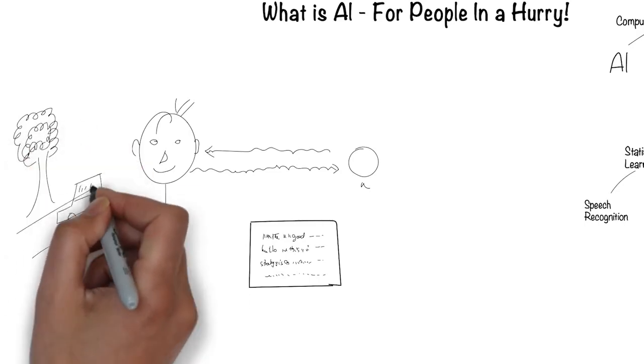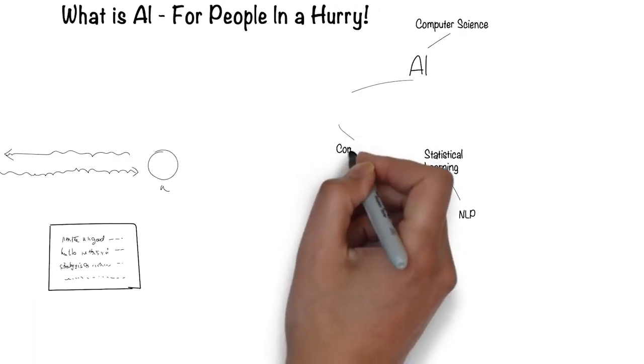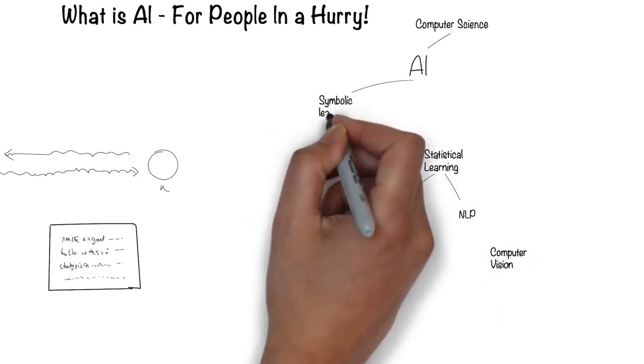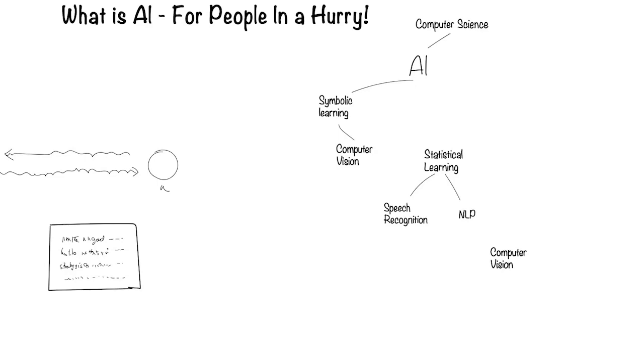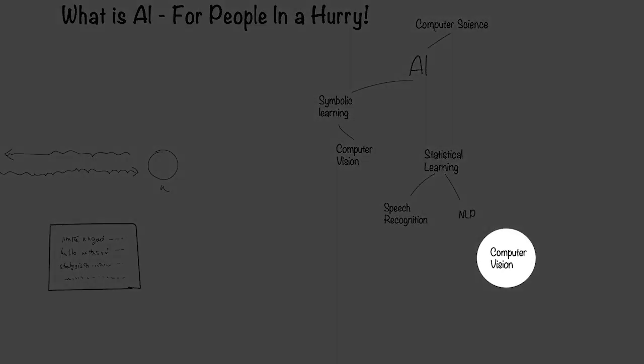Humans can see with their eyes and process what they see. This is the field of computer vision. Computer vision falls under the symbolic way for computers to process information. Recently there has been another way, which I'll come to later.